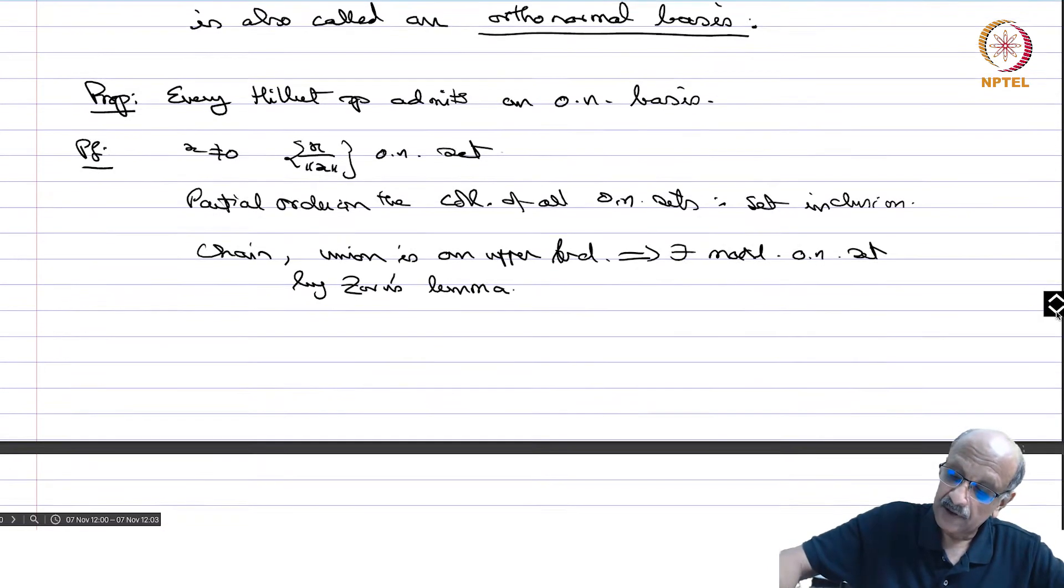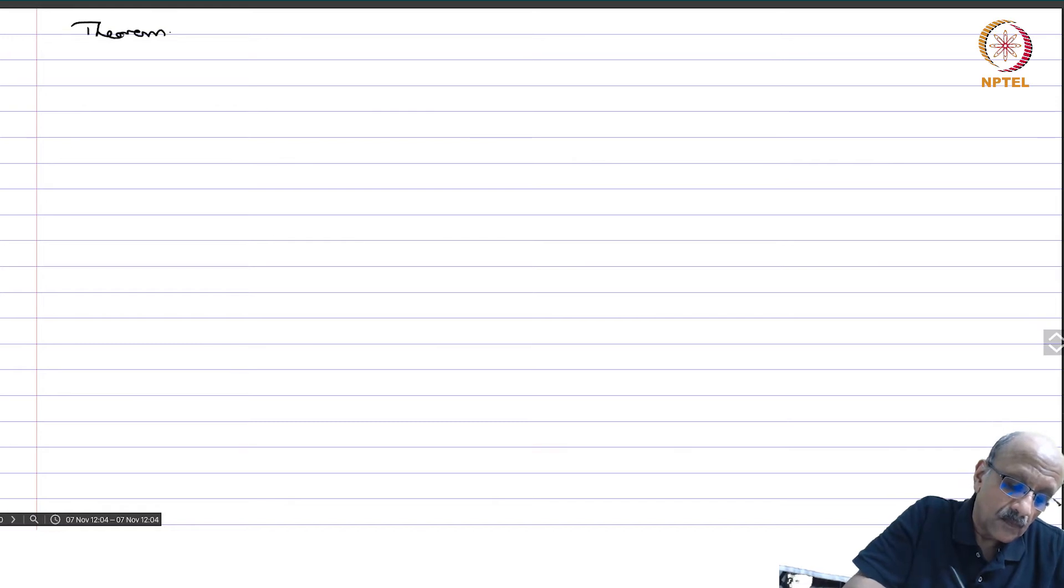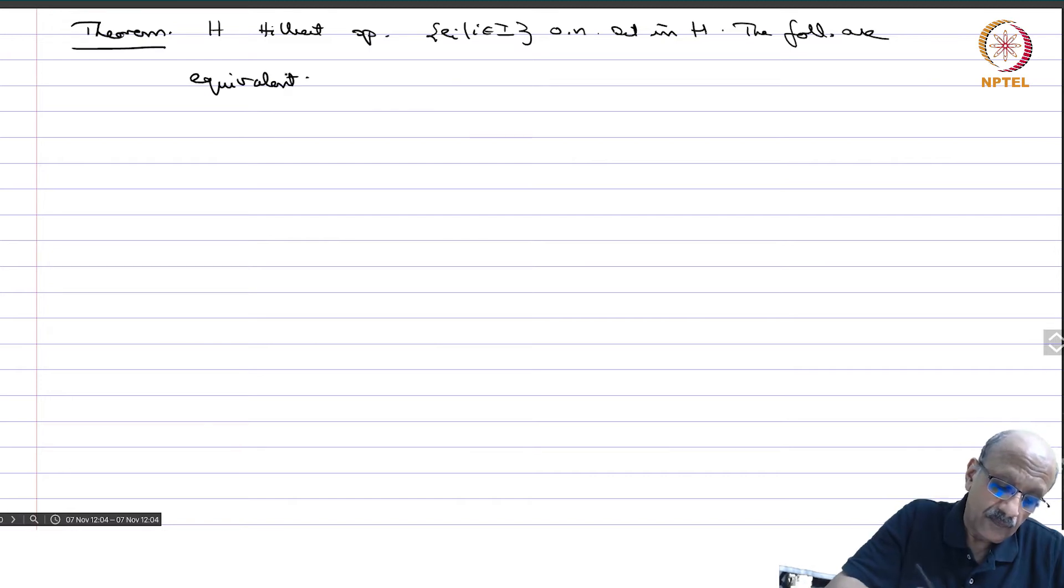It is a very simple application of Zorn's Lemma that every Hilbert space has a maximal orthonormal set or an orthonormal basis. Now we have a very important theorem. H Hilbert space and EI, I in I, an orthonormal set in H. Then the following are equivalent. One, the ON set is complete. Two, if x belongs to H, x orthogonal to EI for all I in I, this implies x equal to 0.